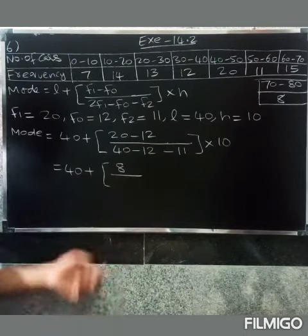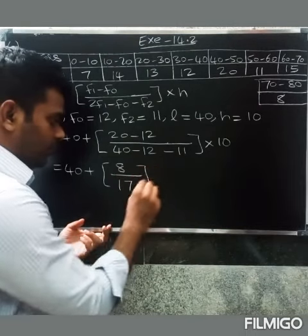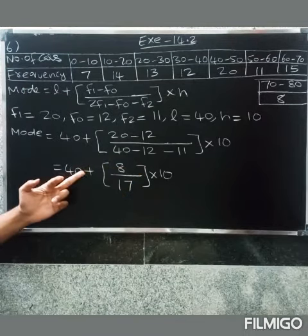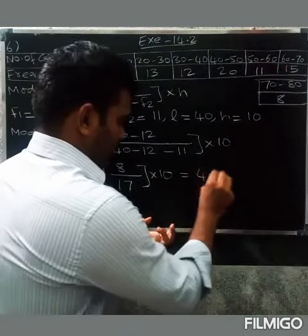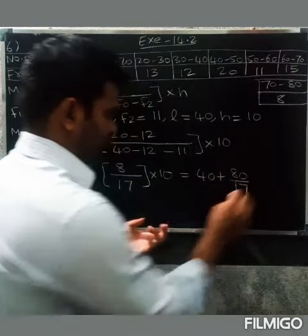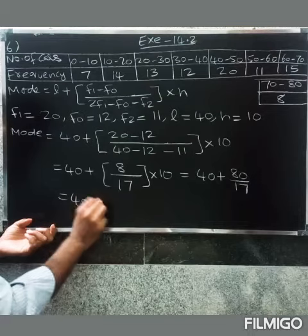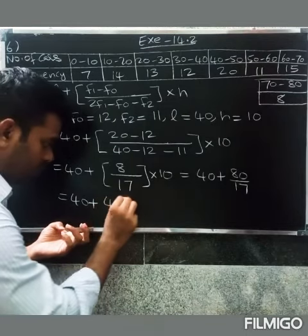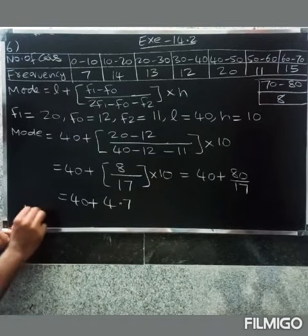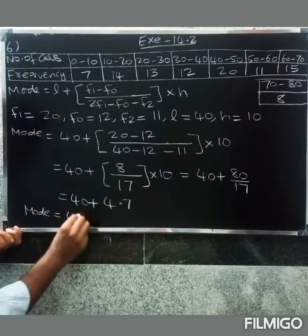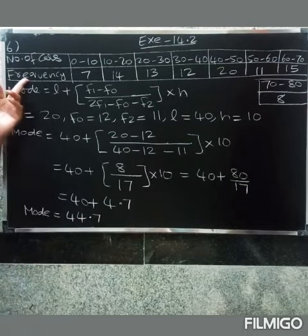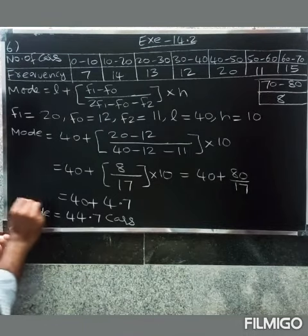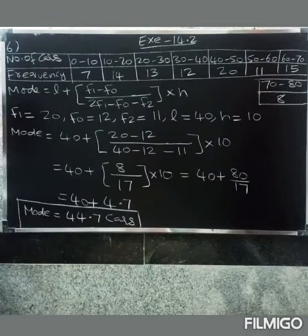So 40 plus 80 divided by 17 gives approximately 4.7. Therefore, mode equals 44.7. So the mode of the data is 44.7 cars. Thank you.